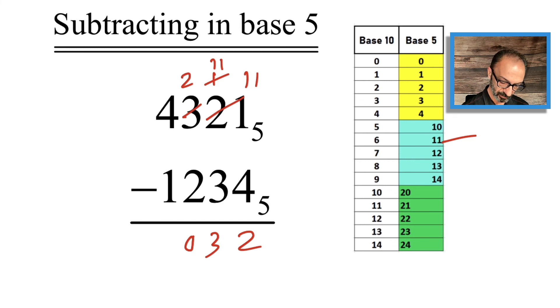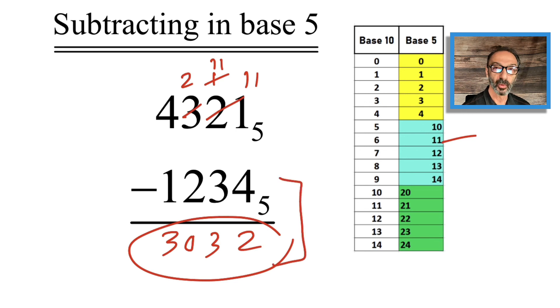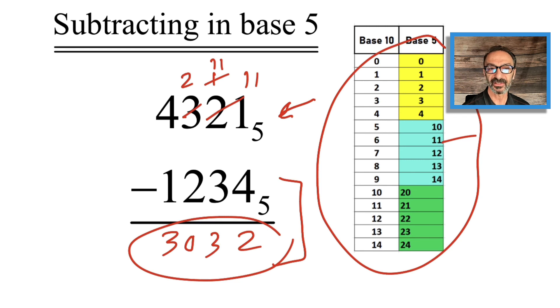Continuing: 2 minus 2 is 0, and 4 minus 1 is 3. So the answer is 3 3 0 3 2 in base 5. You can always double-check by adding 3 0 3 2 and 2 1 2 3 4 — hopefully that gives you 4 3 2 1. It's basically about thinking in base 5 and knowing that 1 4 means 1 five and 4 units, which is like 9. Thank you for watching — if you like this video, hit the like button and subscribe!